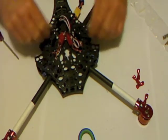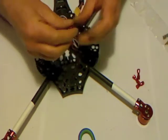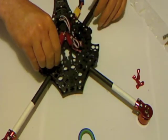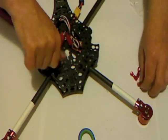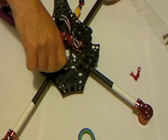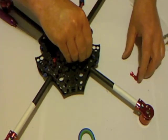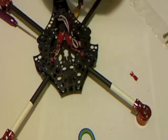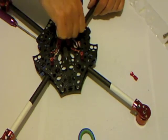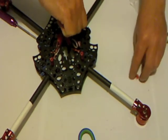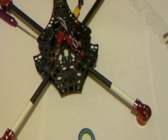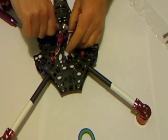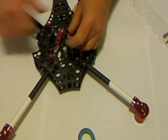Screw them about halfway down. So they're sticking out about five millimeters each. Then the red spacers screw onto the top of them.